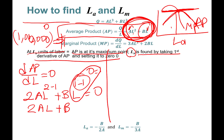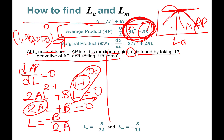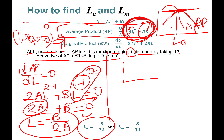Rearranging: send b to the other side, giving negative b, then divide everything by 2a. That's how we get LA = -b / 2a. There is also one more rule to make sure we indeed have a concave curve. For concavity, we take one more derivative.